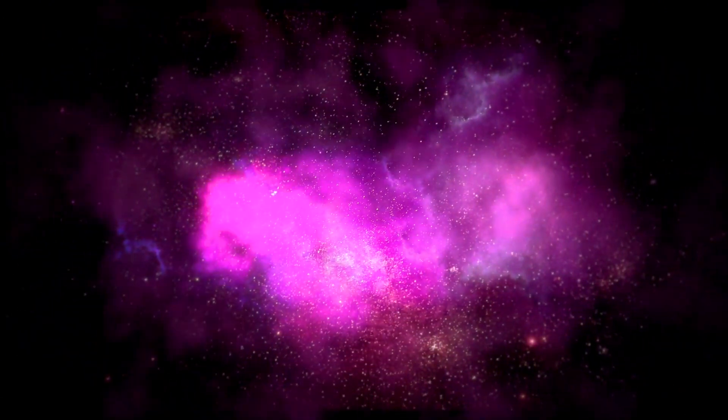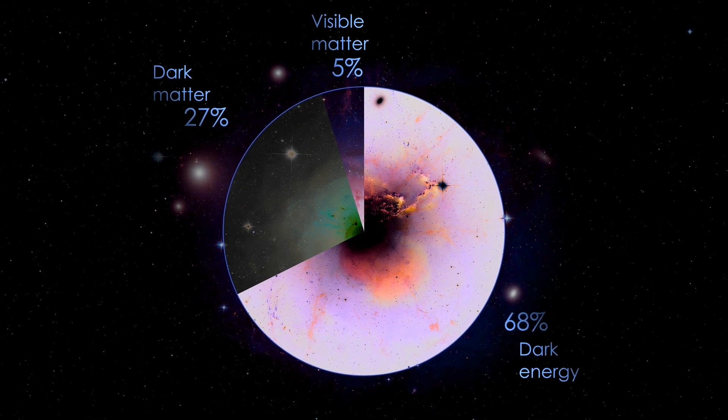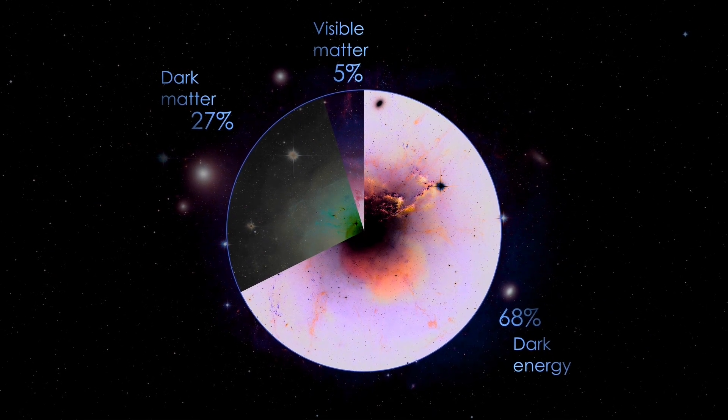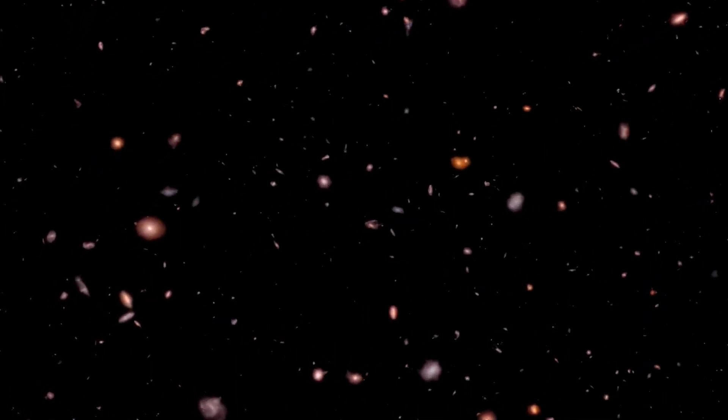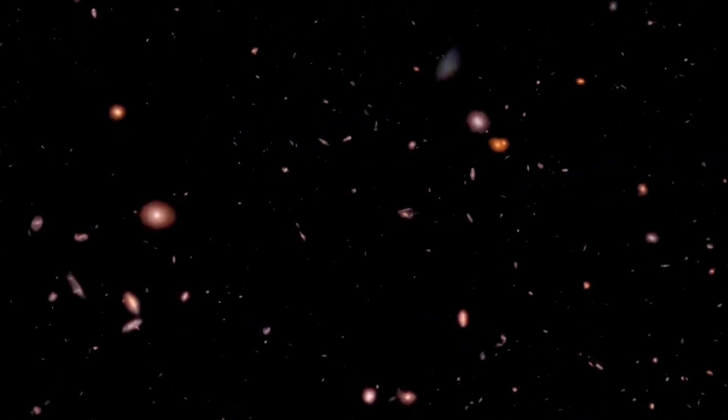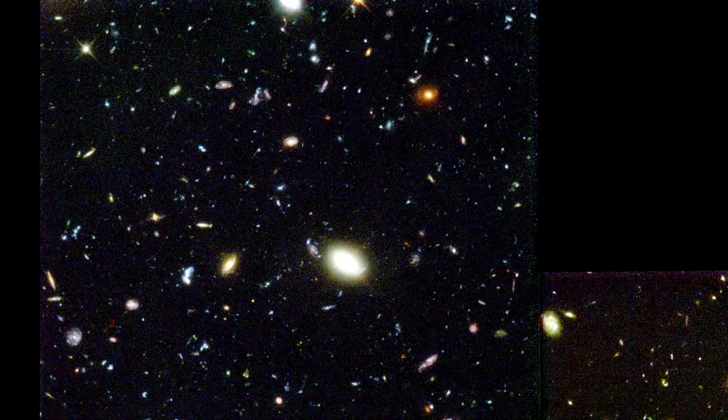Now, here comes the mind-boggling part. Scientists propose that a whopping 85% of all matter in the universe is dark matter, an enigmatic substance that eludes observation because it doesn't interact with light at all. Dark matter is believed to have significantly influenced the evolution of galaxies and the formation of stars from as early as 380,000 years after the Big Bang.